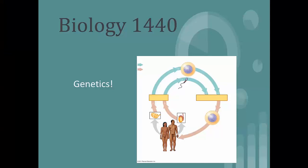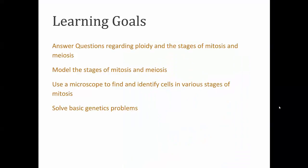In this lab we'll be investigating the process of mitosis, meiosis, and perhaps some Mendelian genetics as well. You may need to do a little bit of pre-lab reading to get caught up. Our basic learning goals: we're going to answer questions regarding ploidy and the stages of mitosis and meiosis, model the stages of mitosis and meiosis, use a microscope to find and identify cells in various stages of mitosis, and solve some basic genetics problems using Punnett squares.